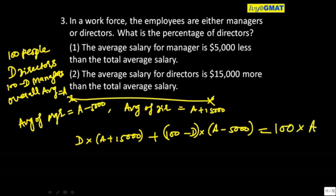Are you okay with this equation or not? Is there any doubt here? Number of directors times average of directors is the sum of directors. Number of managers times average of managers is the sum of managers, which equals number of people times overall average, which is the sum of salaries overall.